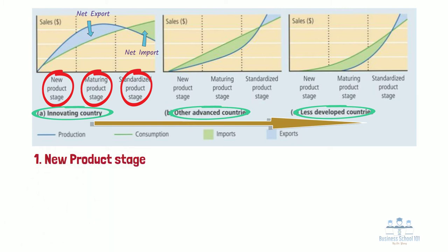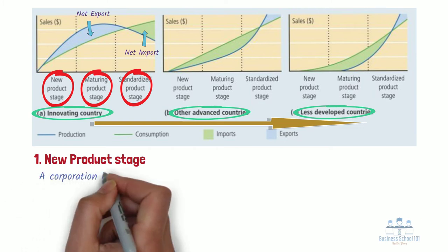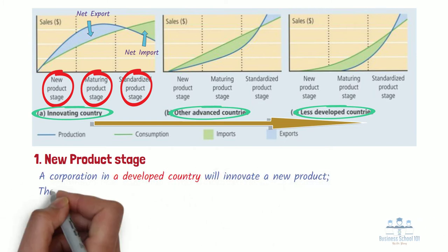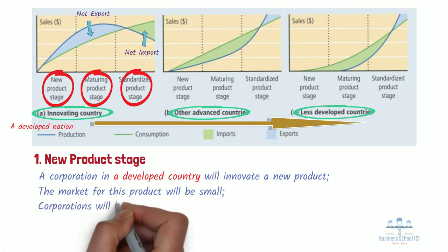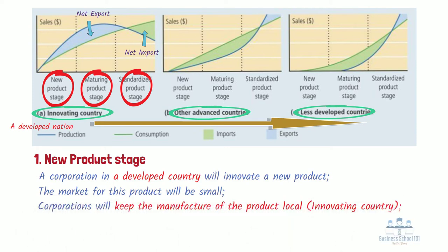First, the new product stage. The cycle always begins with the introduction of a new product. In this stage, a corporation in a developed country will innovate a new product. The market for this product will be small and sales will be relatively low as a result. Vernon deduced that innovative products are more likely to be created in a developed nation because the buoyant economy means that people have more disposable income to use on new products. To offset the impact of low sales, corporations will keep the manufacturing of the product local, so that as process issues arise or a need to modify the product in its infancy stage, changes can be implemented without too much risk and without wasting time.